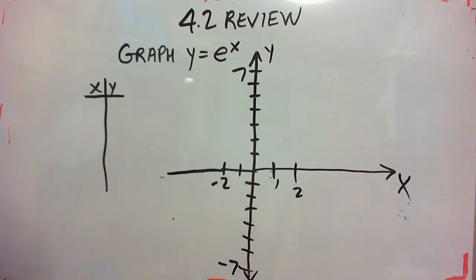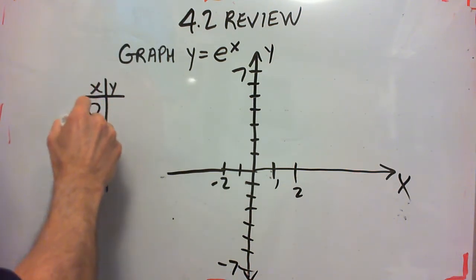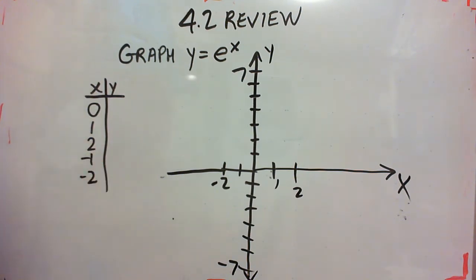They don't have any tricky things like vertical asymptotes. It does have a horizontal asymptote, but you really don't need to graph it first. Just graph a bunch of points. We're going to find y when x equals 0, 1, 2, negative 1, negative 2.